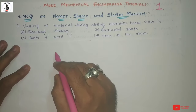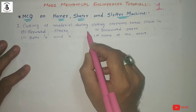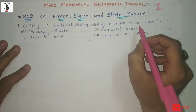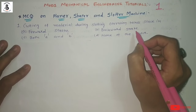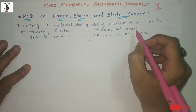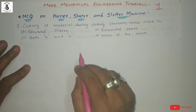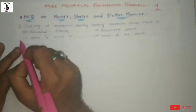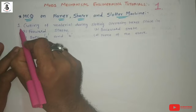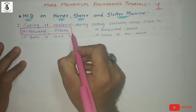Basically, in case of slotting machines, or shaper, planner, and slotter machines, the cutting of materials during operations only happens on the forward stroke. In all these machines, the return stroke becomes an idle stroke — no material is removed during the backward or return stroke. So the right answer is option A: forward stroke.